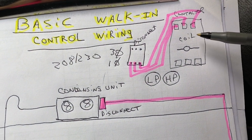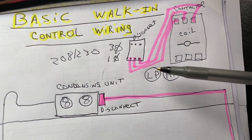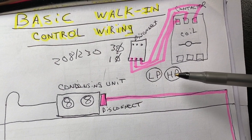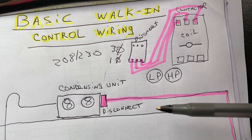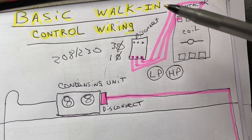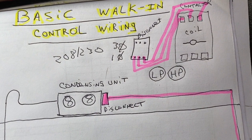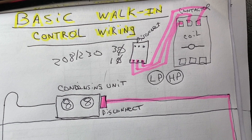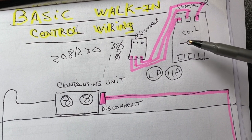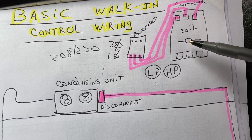So the line goes to the top, load comes off the bottom of your disconnect, so it comes over to your contactor. L1, L2, L3. That's the top of your contactor. Inside here you're going to have a low pressure control and a head pressure control. We're just talking about basic wiring right now.